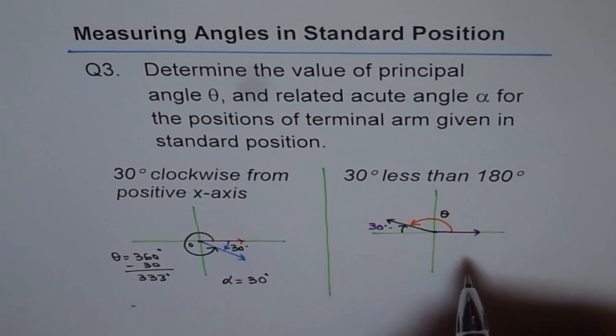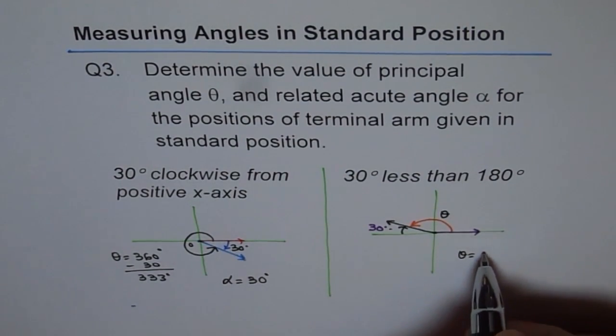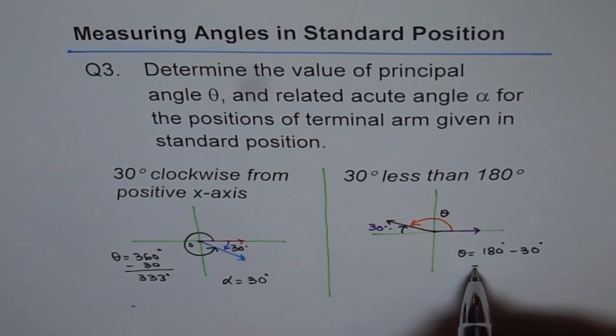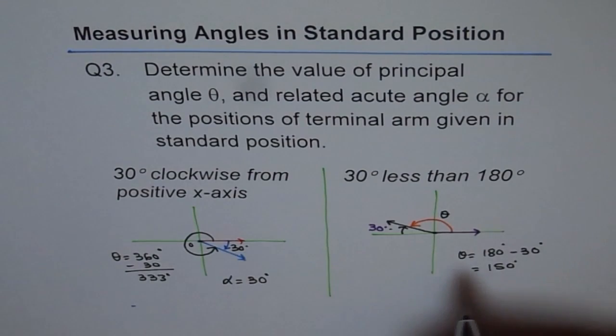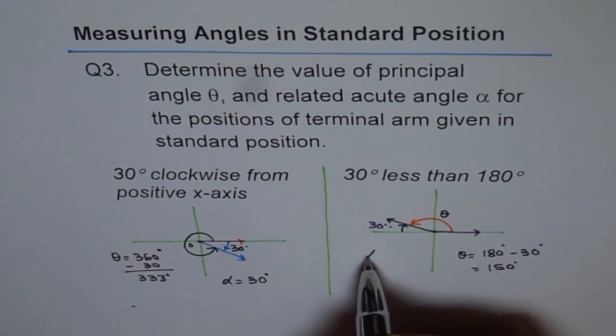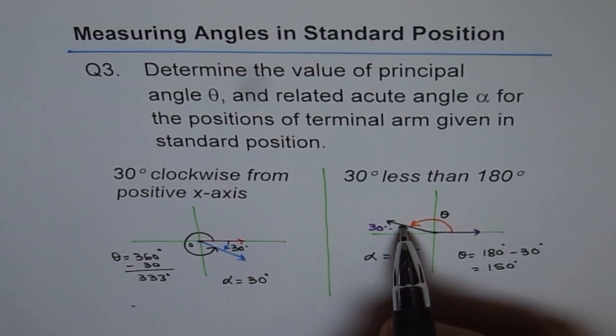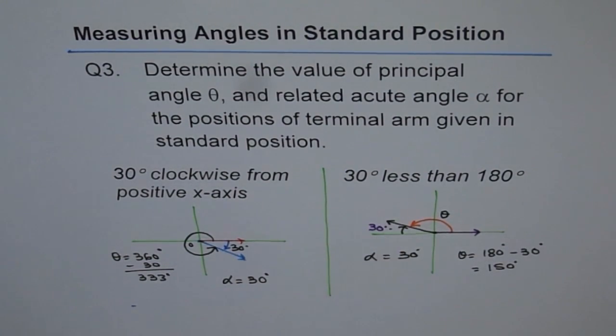So theta is 180 degrees minus 30 degrees. Which is 150 degrees. And related acute angle is given to us as 30 degrees. It is the angle between terminal arm and the horizontal x-axis.